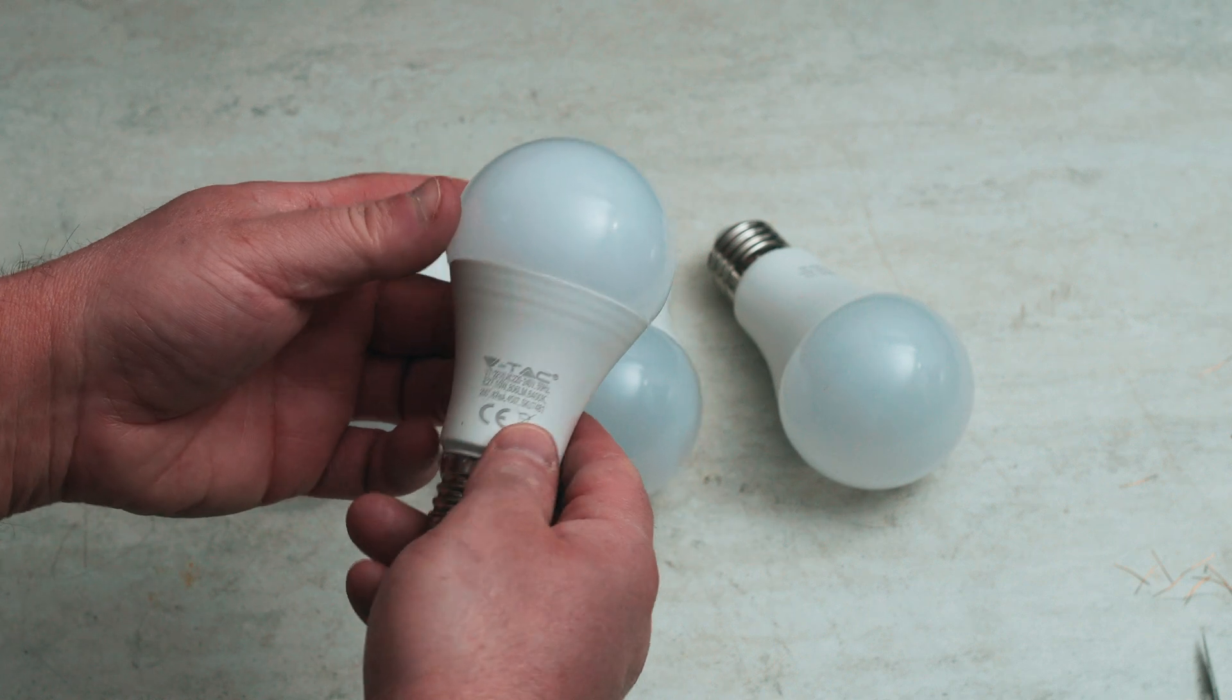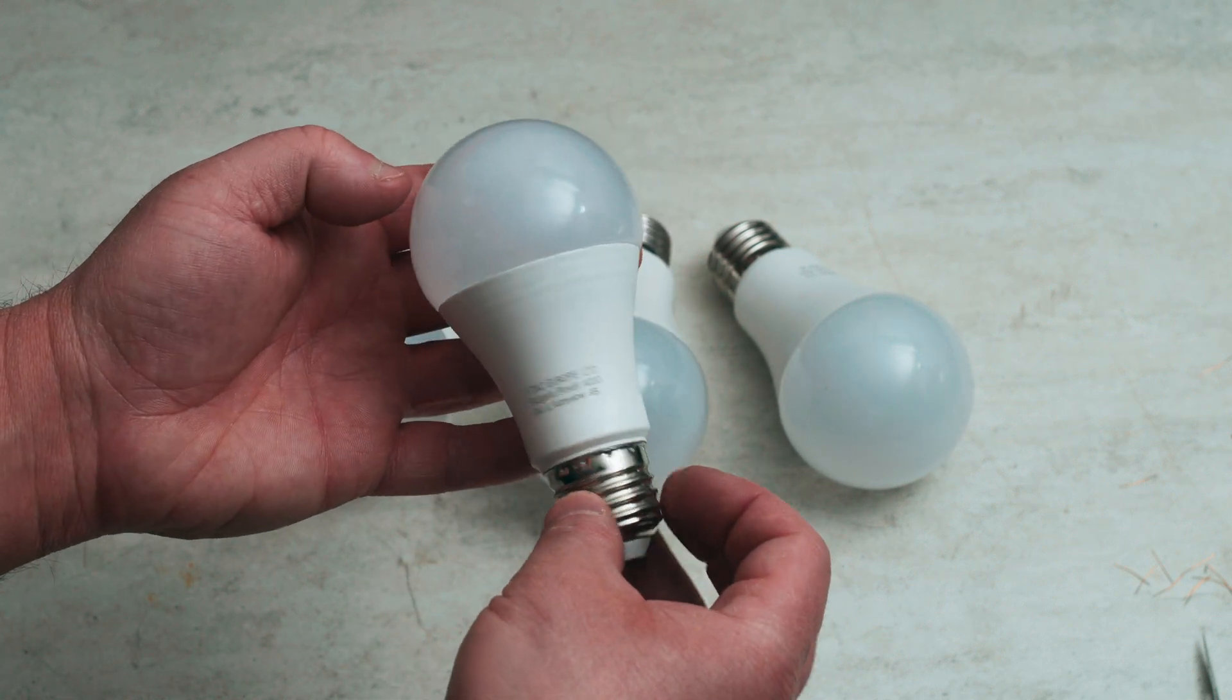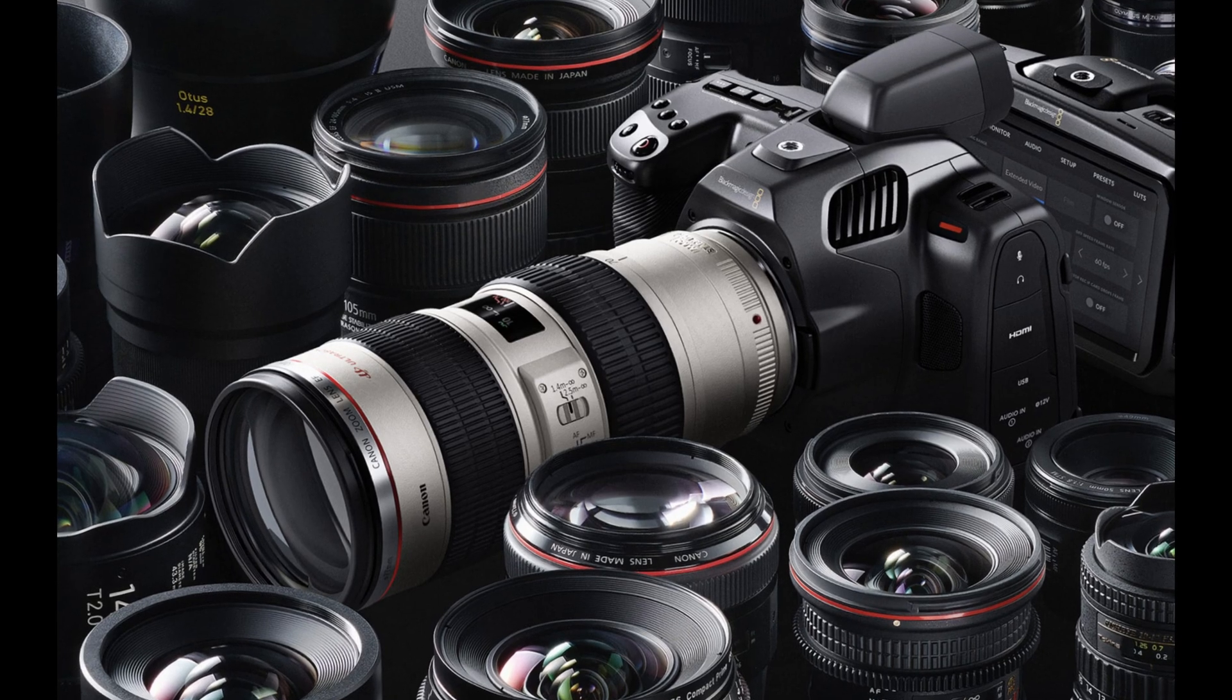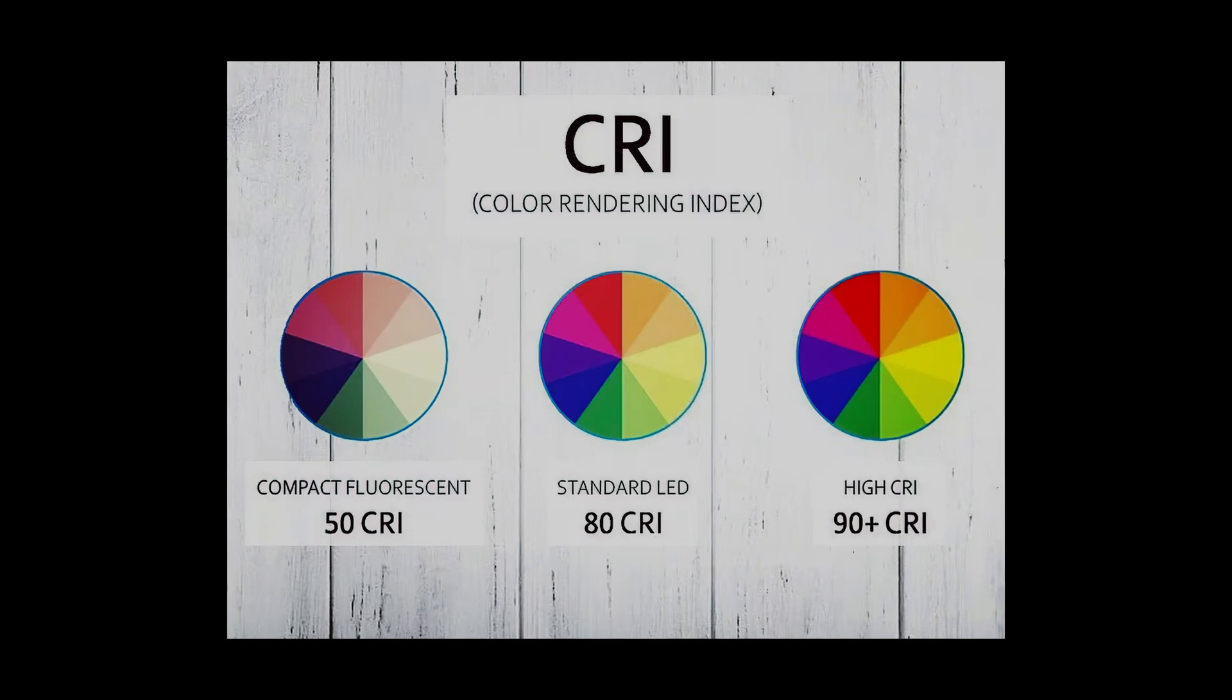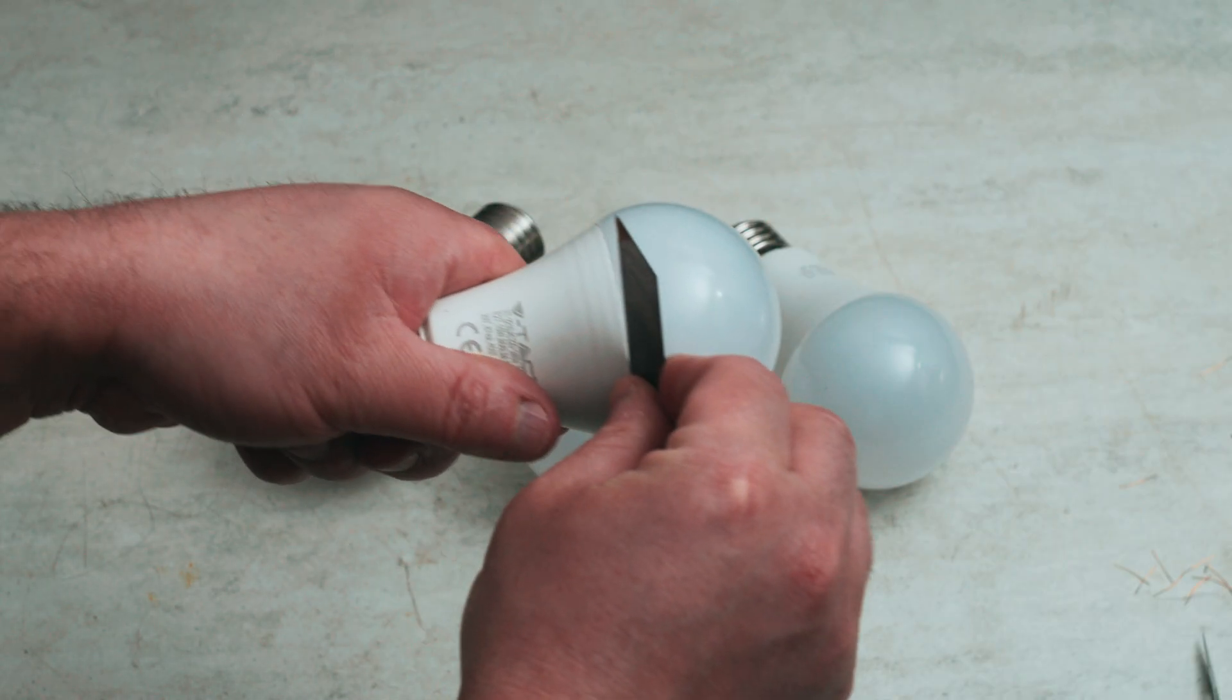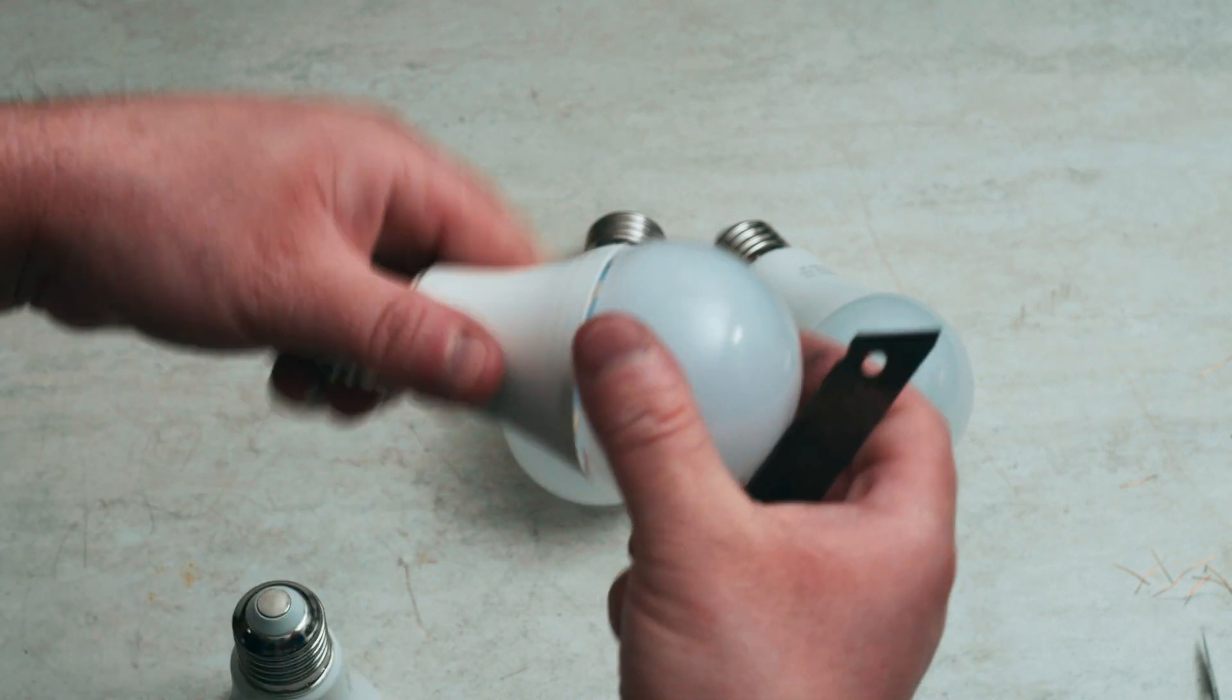These are 10 watt 95 plus CRI LED bulbs. CRI stands for color rendering index. For professional photo and video applications, it's important to have the color rendering index at least 95 to capture the correct colors on your camera sensor.